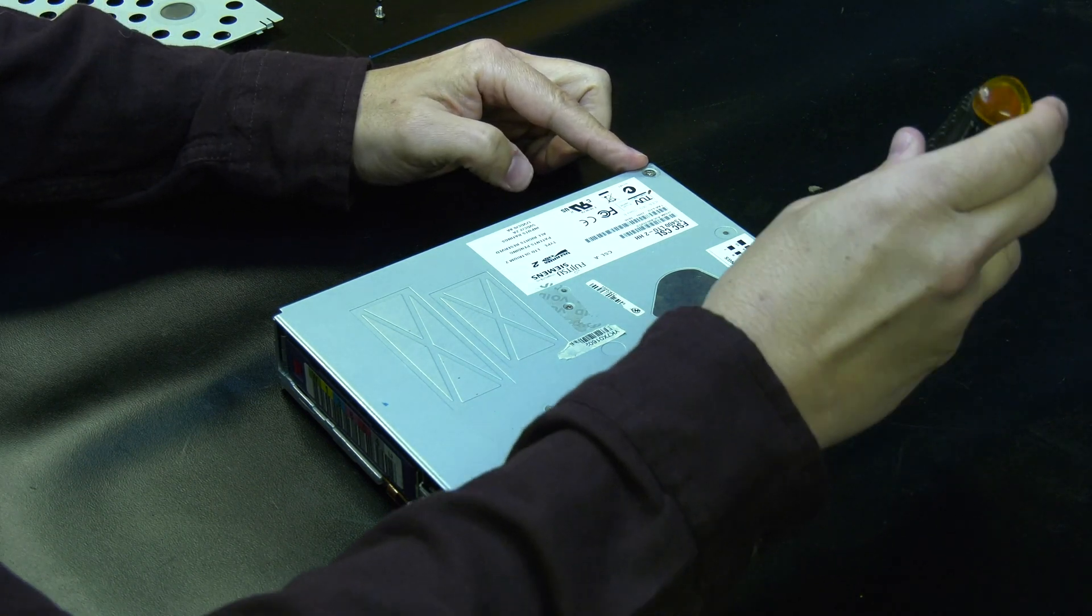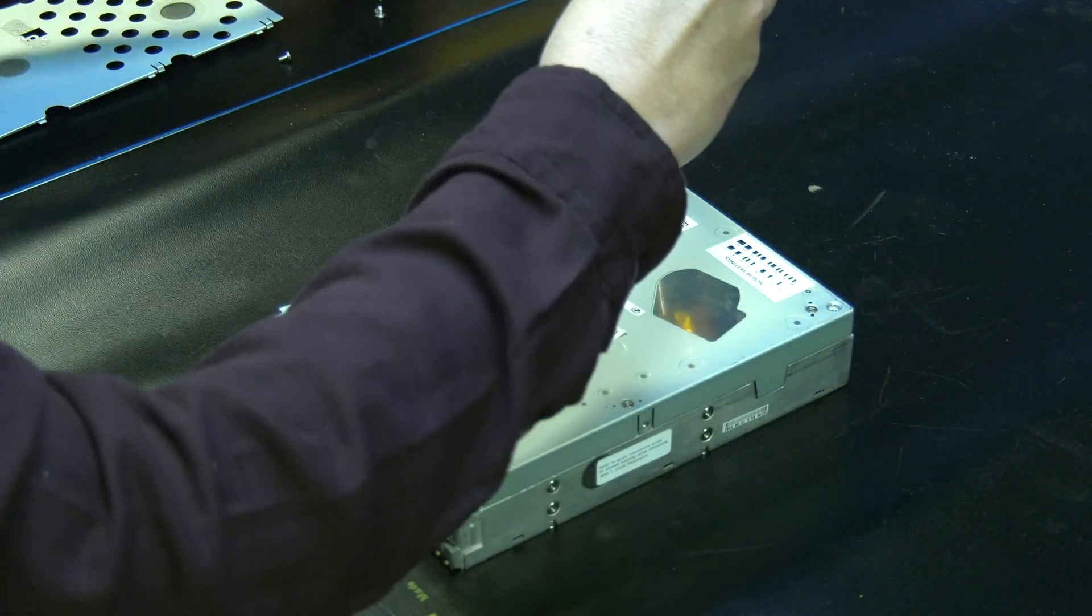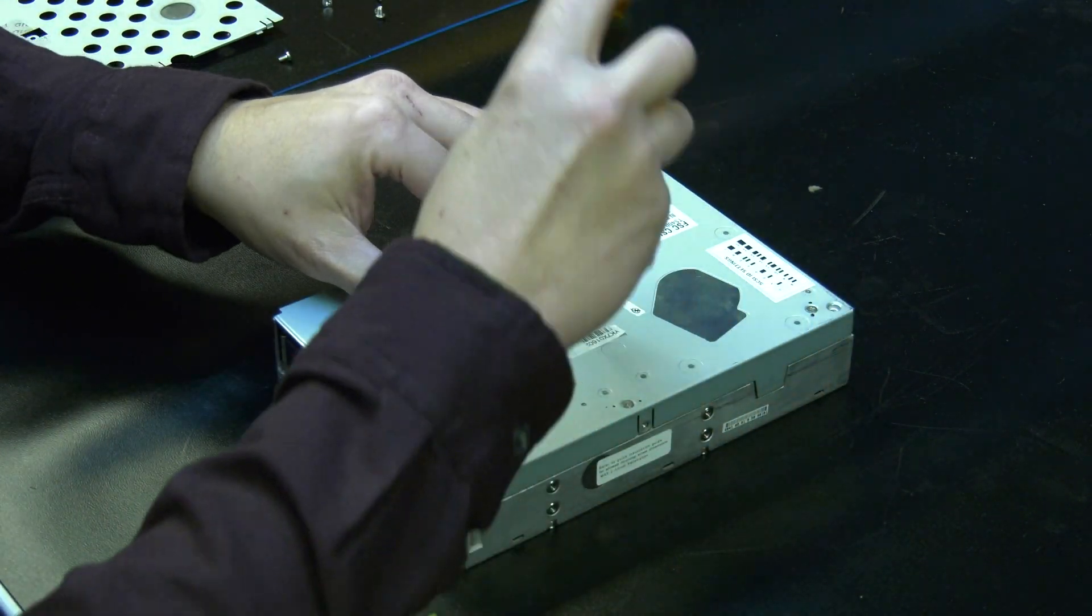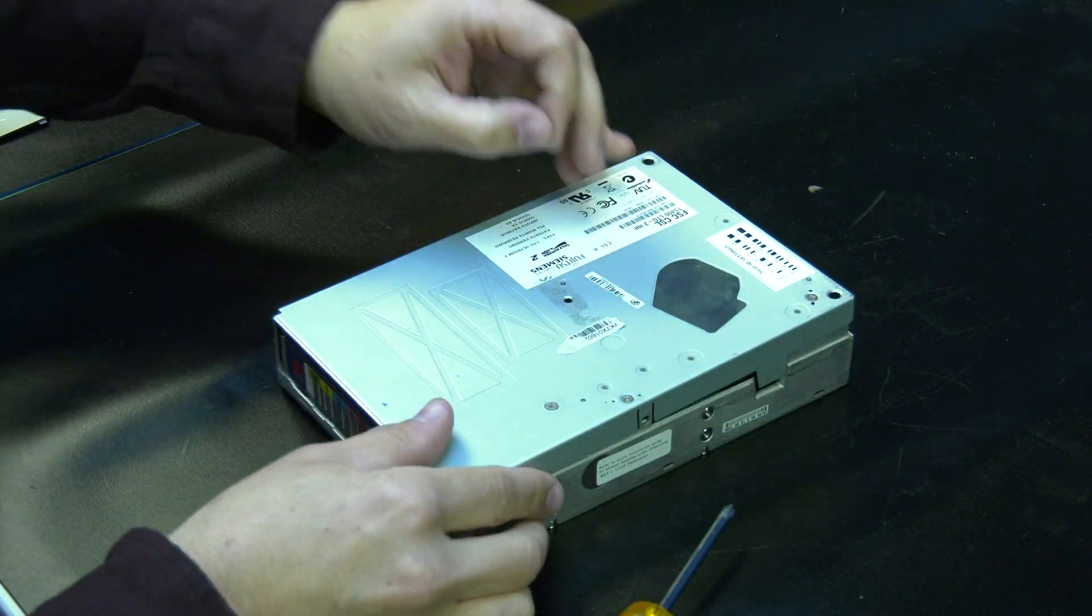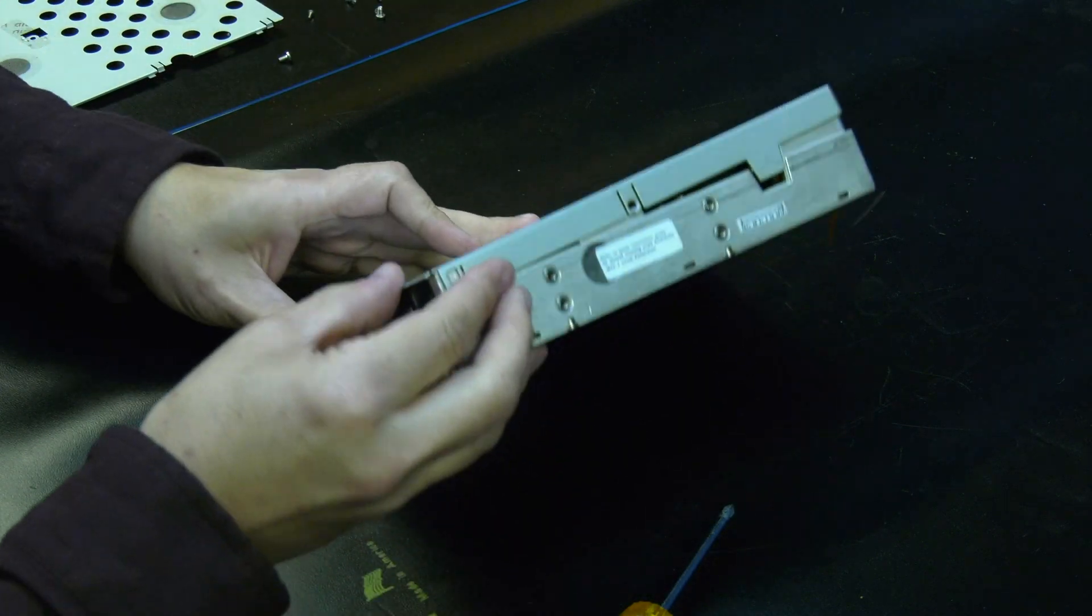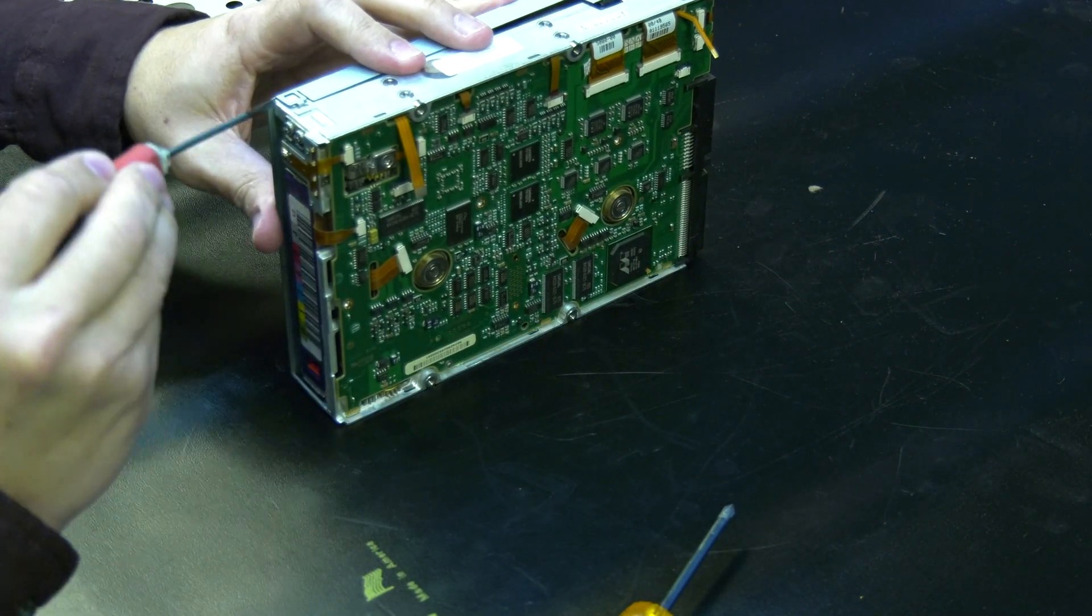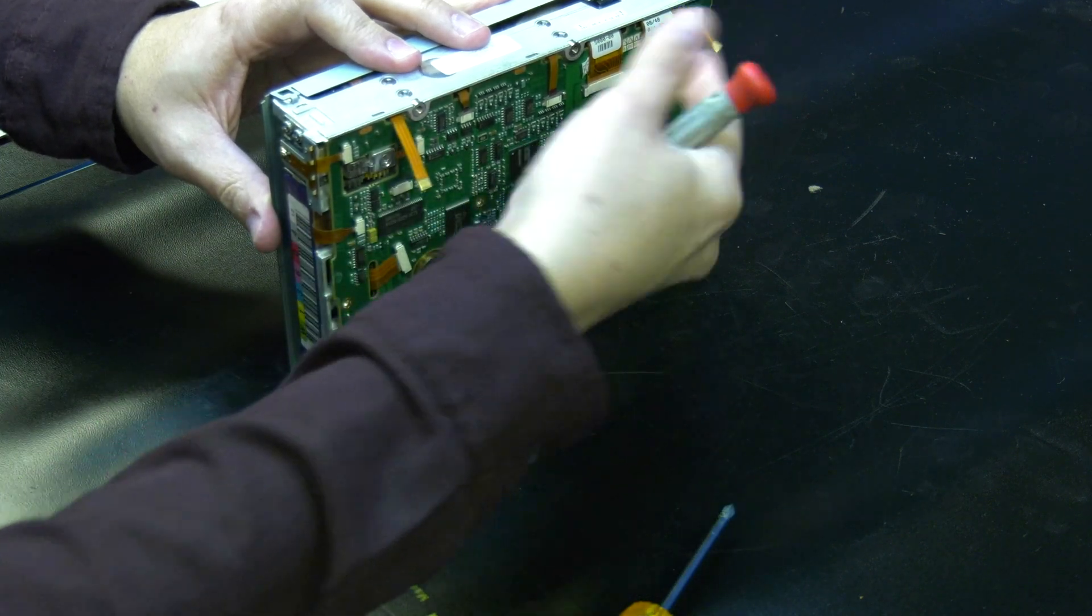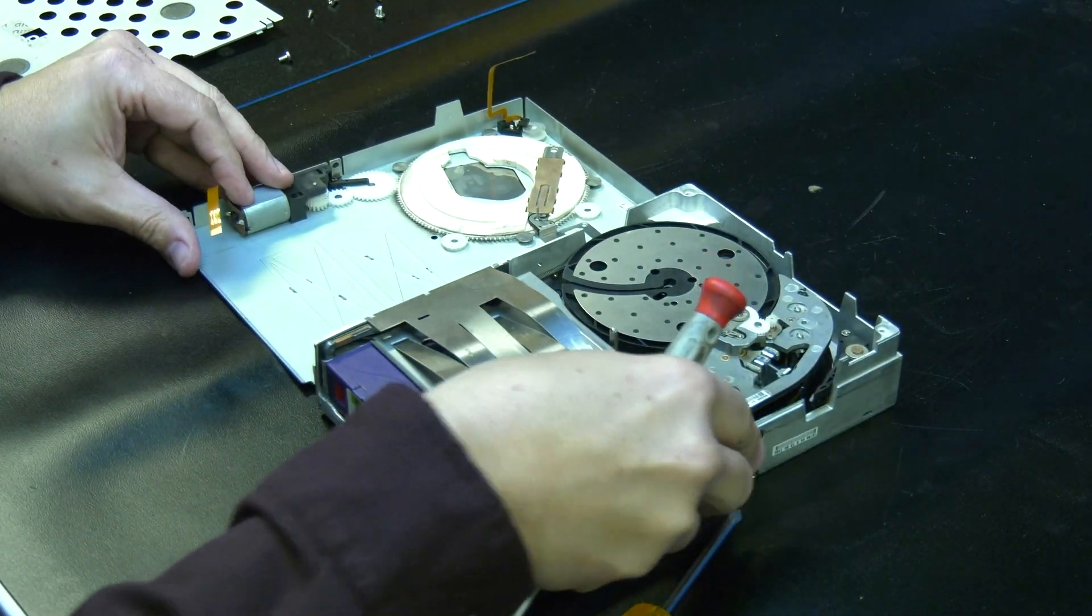The screw in the middle may very possibly be covered by a sticker that will need to be removed before you can access it. Once all screws are out, you can flip the drive on its left side and use a small flat head screwdriver to release the front tab that holds the top cover in place on the right side. Then carefully hinge the top cover away from the drive and pull it off and set it to the side.